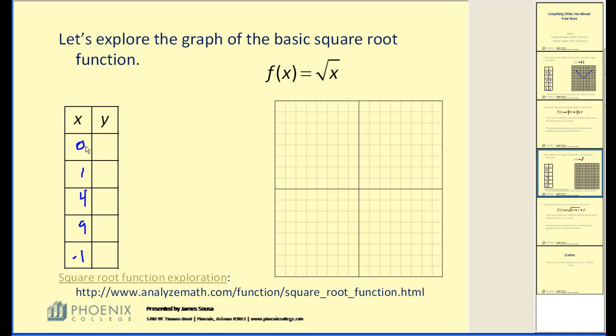Let's take the square root of our x values. Square root of zero would be zero, square root of one is one, square root of four is equal to two, square root of nine is equal to three. Now the square root of negative one is actually equal to i, the imaginary unit. And since our x and y axes are real number lines, in this graph the y value will be undefined.